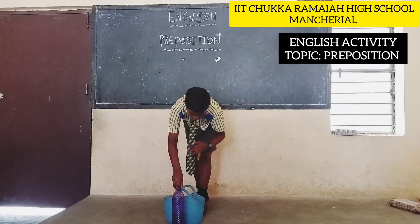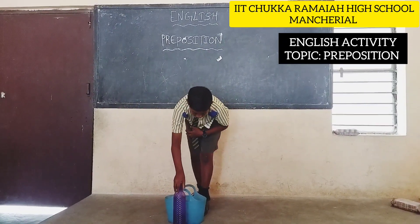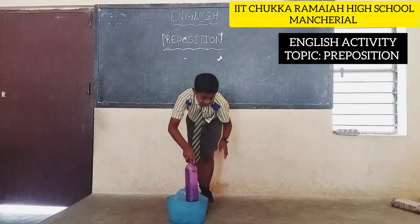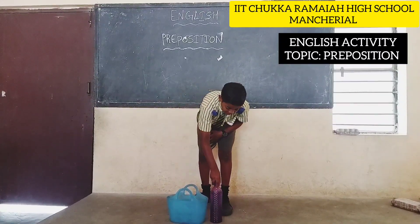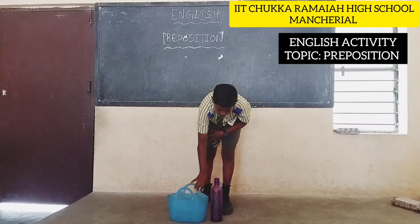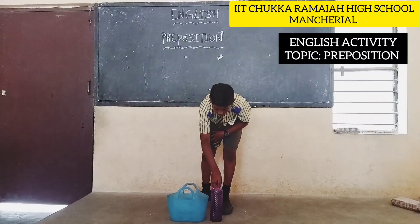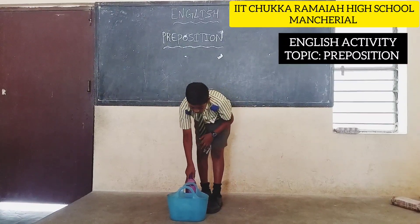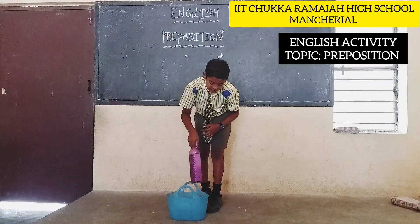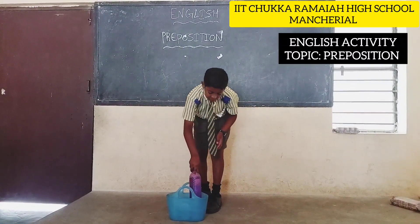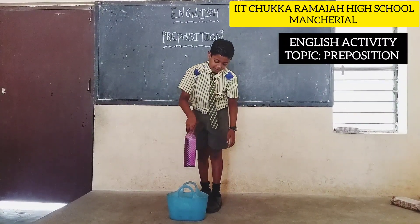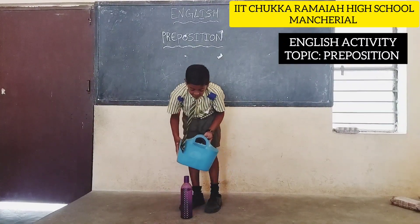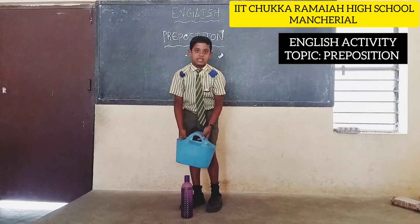The bottle is inside of the basket. The bottle is beside the basket. The bottle is behind the basket. The bottle is inside the basket. The bottle is above the basket. The bottle is under the basket.